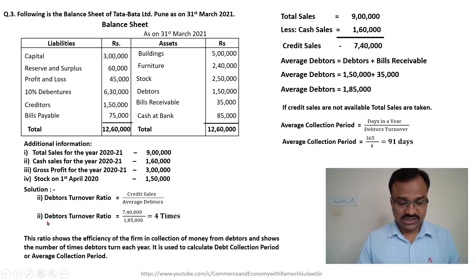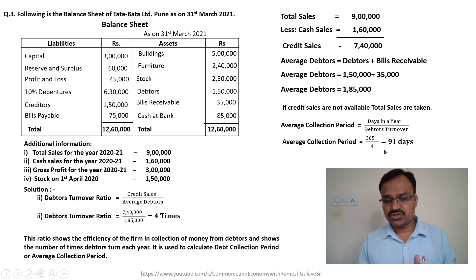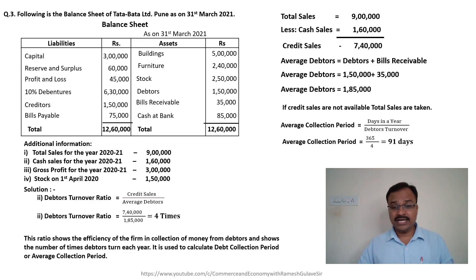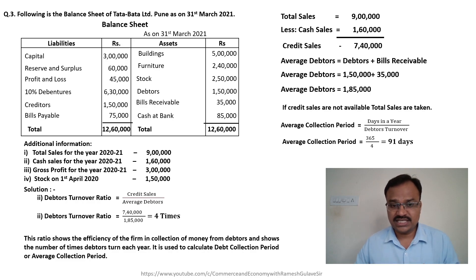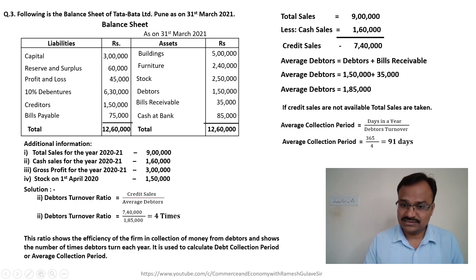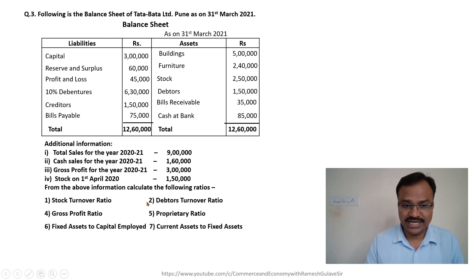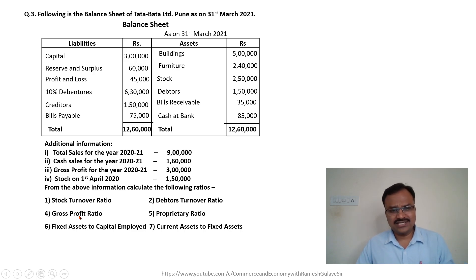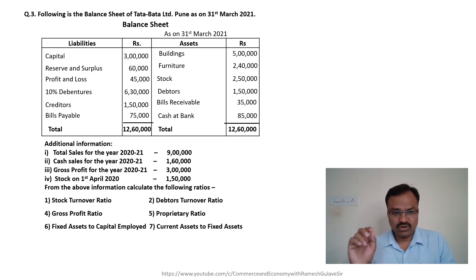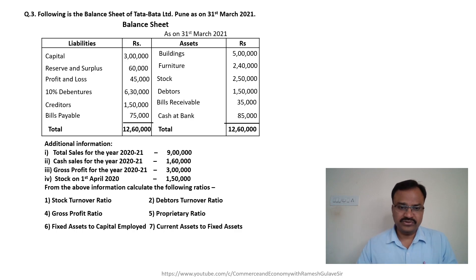I hope the basic concept of debtors turnover ratio and average collection period is clear. Debtors turnover ratio can be used to calculate the average collection period and it shows the efficiency of the business in collecting money from the debtors. In this video I would like to stop now because of time restrictions. The remaining ratios we will discuss in the next session - stock turnover ratio and debtors turnover ratio have been covered. The next ratio, which is the third ratio, is gross profit ratio. Its formula is gross profit divided by sales multiplied by 100. We will discuss the remaining ratios in the next part of the video.